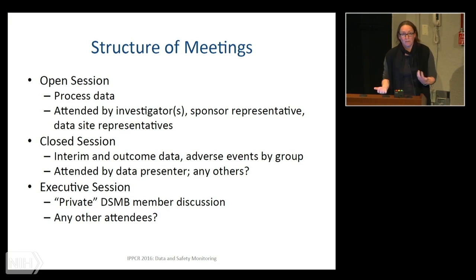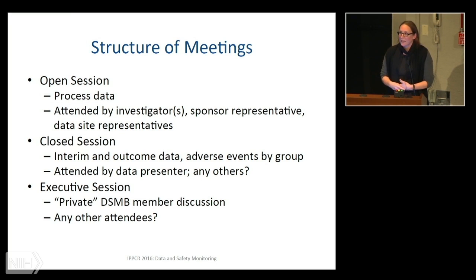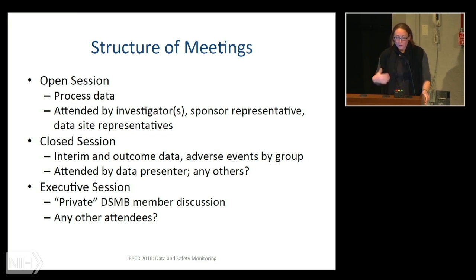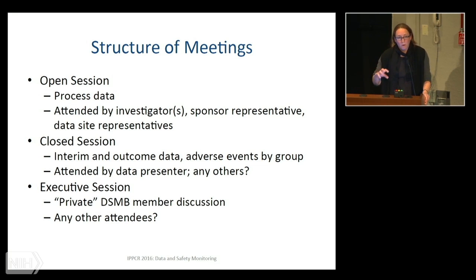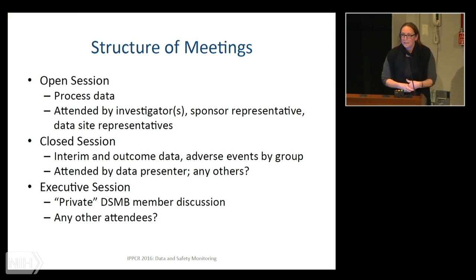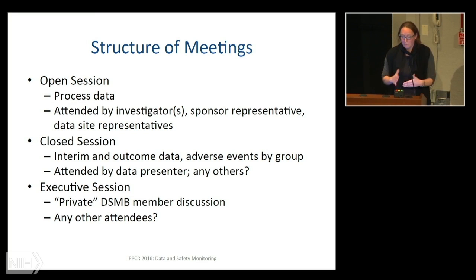Meetings generally have a recommended structure. There would be an open session where the sponsor and investigators summarize the trial, the accrual, and some unprotected information about how things are going — site representatives may be present, discussing data quality. Then there will be a closed session in which the protocol team — the people running the trial — would all leave. That's when you would essentially be presenting data by arm, certainly any unblinded data. Certain types of adverse events are indicative of particular treatments, so if you knew that AE rate you'd understand how people are doing on a particular arm — those kinds of data tables would be reserved for the closed session.